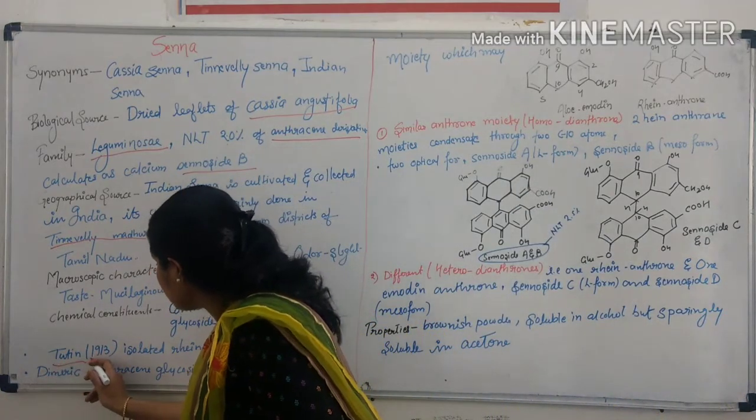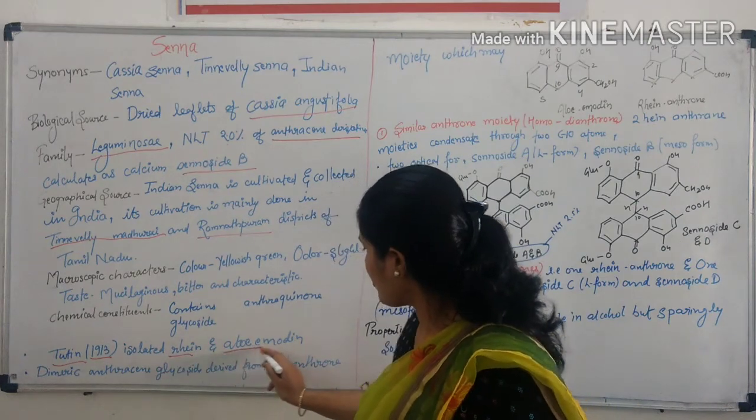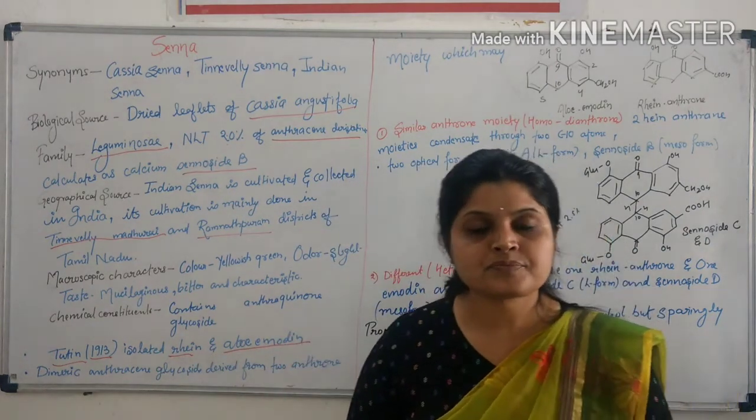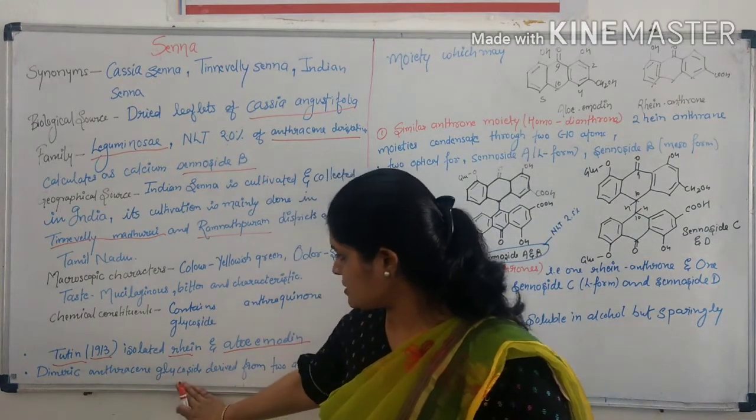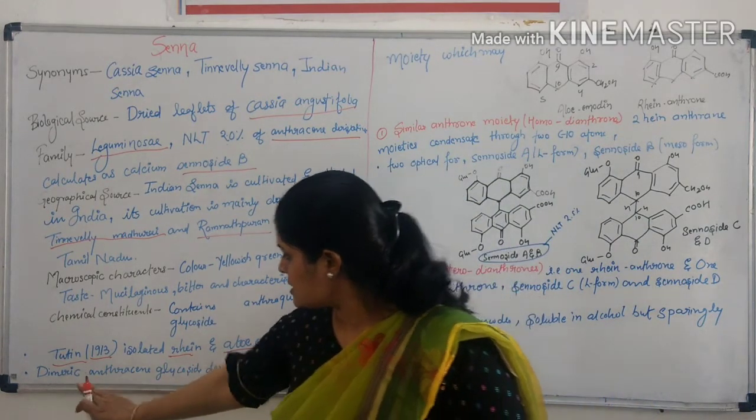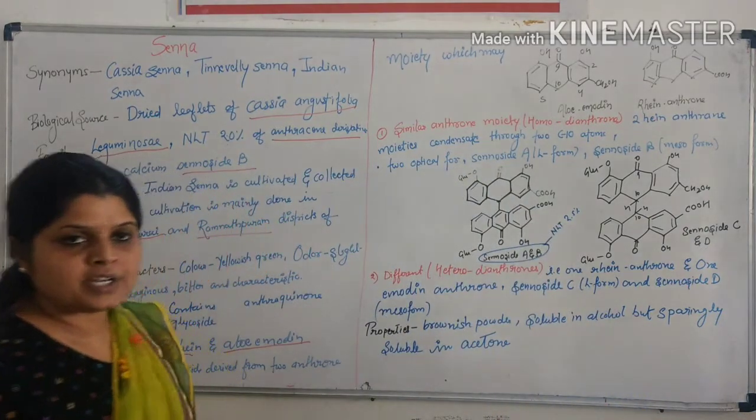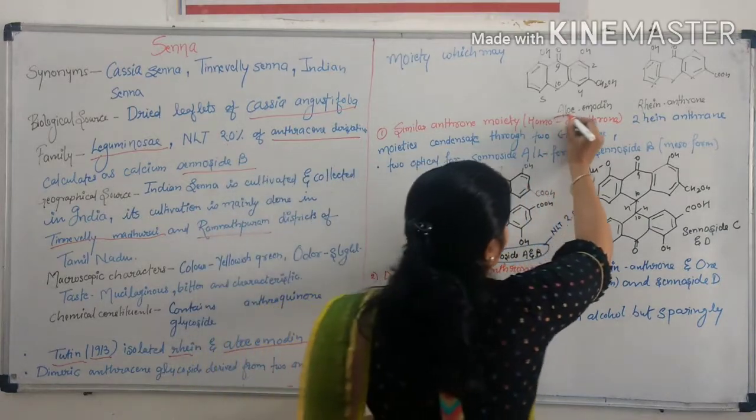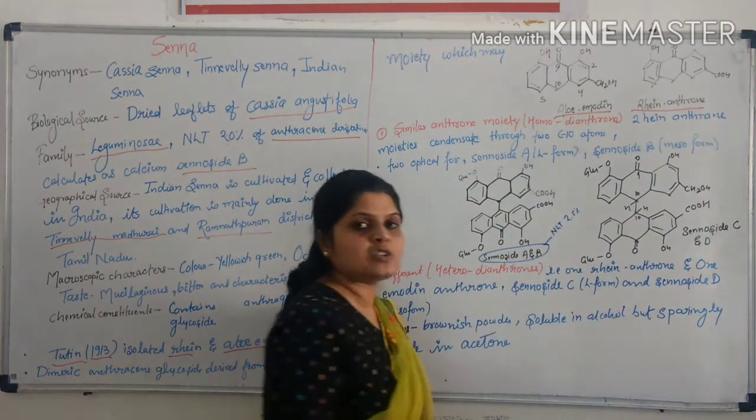In 1930, isolated rhein and aloe-emodin. Direct anthroquinone glycosides convert to anthroquinone, which may be aloe-emodin, rhein, and running enzyme.